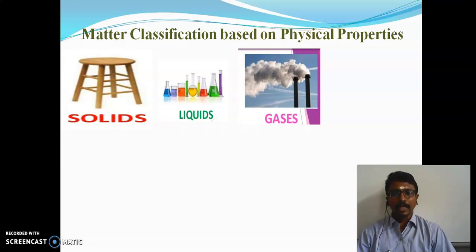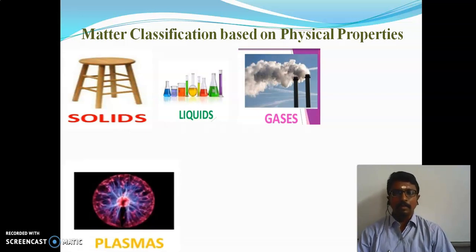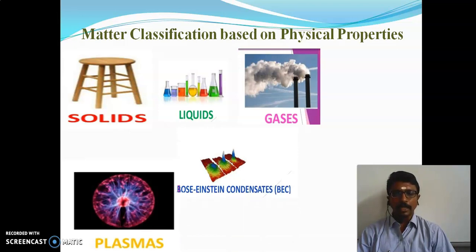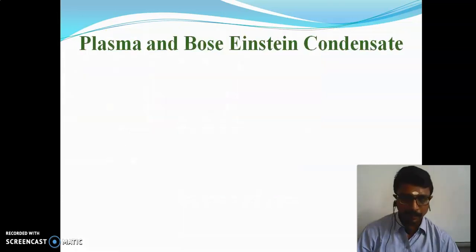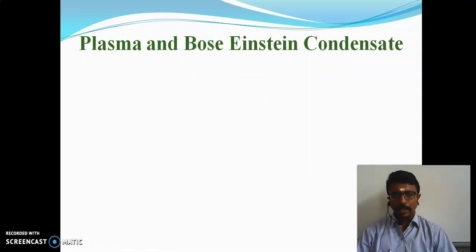There are also two more classifications of matter. The fourth one is plasma, and the fifth one is Bose-Einstein condensate. Research work on these two states is currently ongoing, and we will give you a detailed explanation about both plasma and Bose-Einstein condensate.